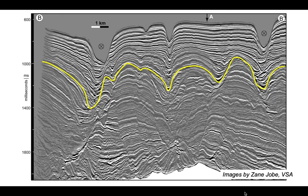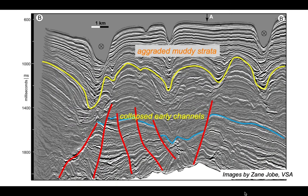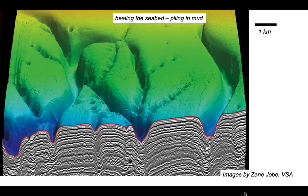If that mud deposition were to continue, eventually it would just seal everything. Looking deeper, you can see rather more complicated forms with fault systems collapsing into channel structures - early-formed channel structures in the deeper subsurface with normal faults collapsing into the channel axis, overlain by muddy strata that have simply aggraded over these early channels, gradually healing the seabed but still reflecting part of that deeper morphology. Stepping back, we can appreciate that process in three dimensions looking onto the seabed in colour, with the vertical profile showing the aggradational muds below.